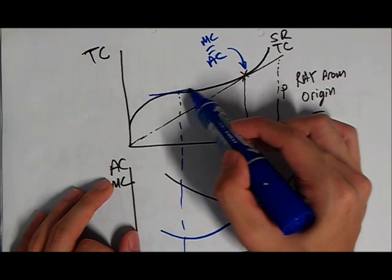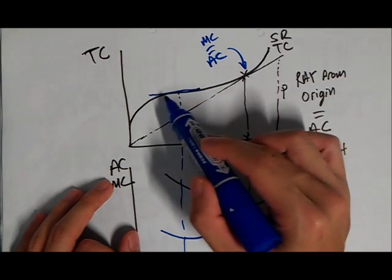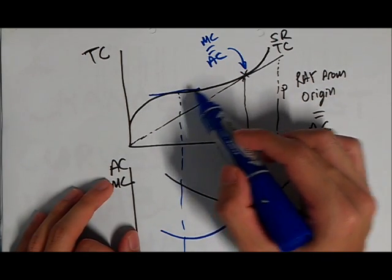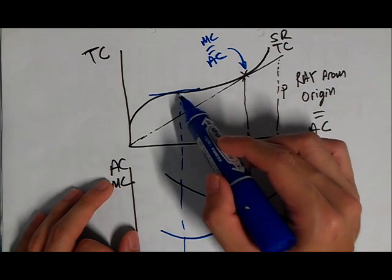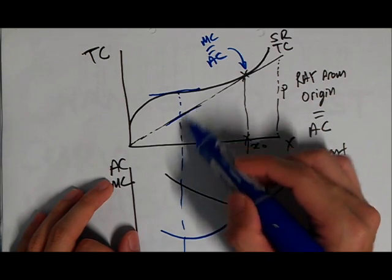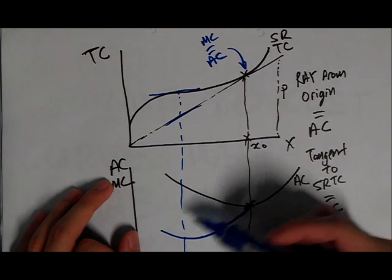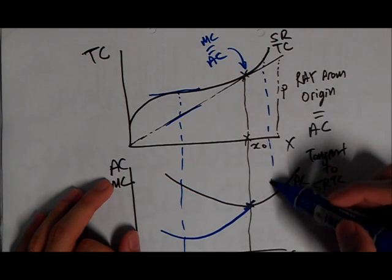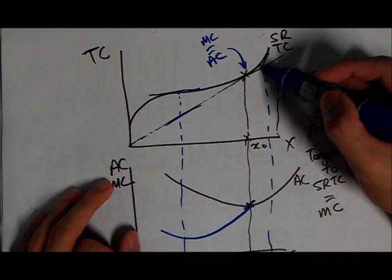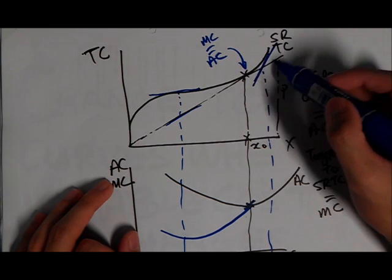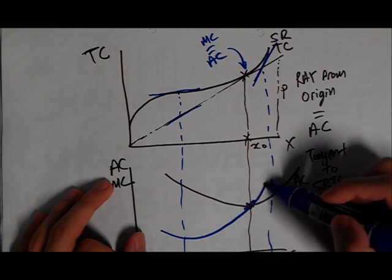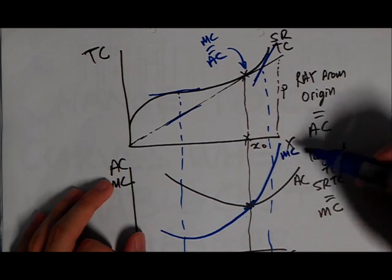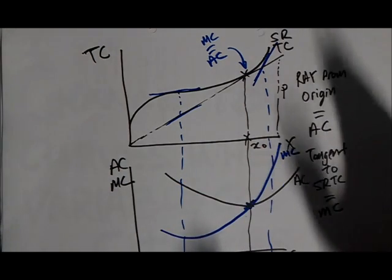And how do I know that my marginal cost is lower than my average cost at this region? Let's just take this point for example. And I draw a tangent over here. You can see how flat this is. So if you were to measure the gradient of this line, it would be smaller than compared to this. That's why marginal cost is lower at this point. And at this point, let's take this for example. I know that this tangent over here is steeper than this line, which means that my marginal cost is higher.